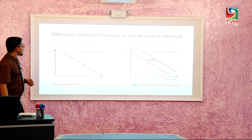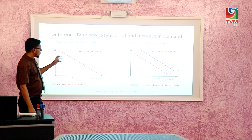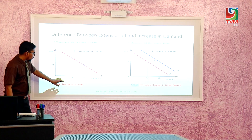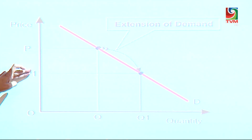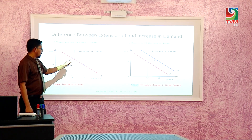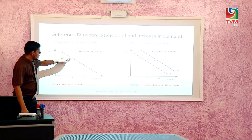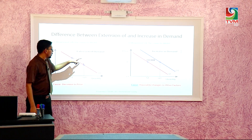First we see the difference between the extension of demand and increasing the demand, because often times students confuse between extension and increase. Extension occurs when the cause is only the price. The price will decrease, and because of that there is an extension of demand, which means the movement is on the demand curve — movement on the curve to the right.